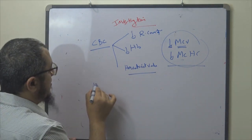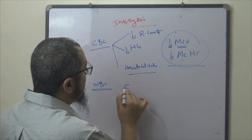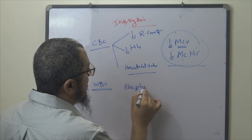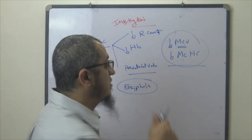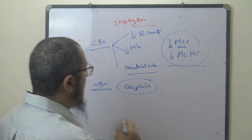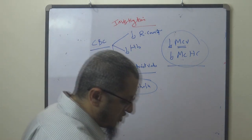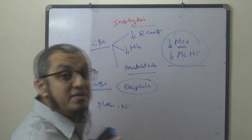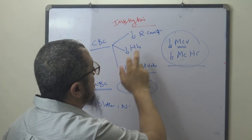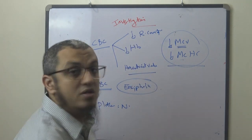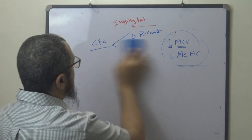As for white blood cells, in iron deficiency anemia they may be normal. So to summarize, the CBC is very important: you will find MCV low, MCHC low, hemoglobin low, red cell count low, and hematocrit value low. The CBC is the most common and easiest investigation.